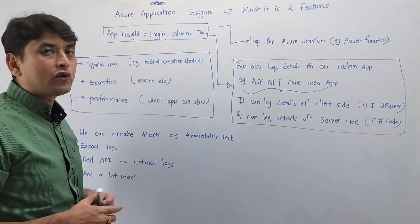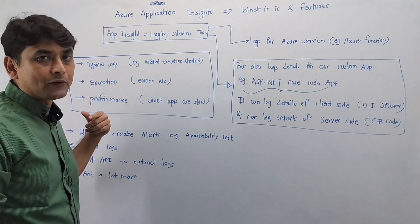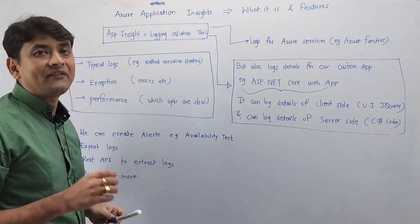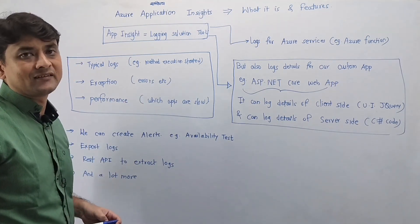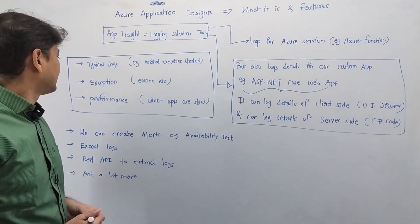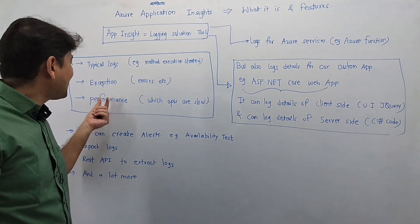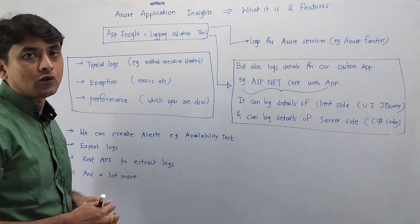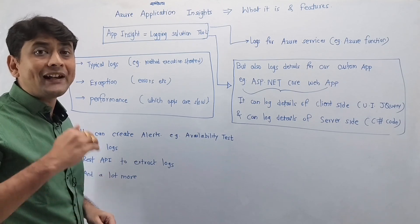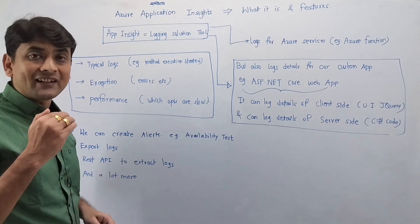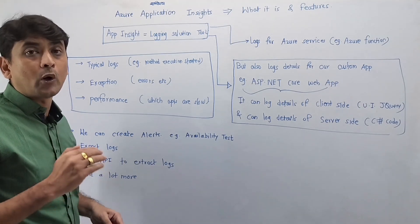We can also find the details of exceptions, that is errors, so we can find the complete trace of an error. We can also find performance issues, for example APIs or Azure Functions which are running slowly and causing performance issues.